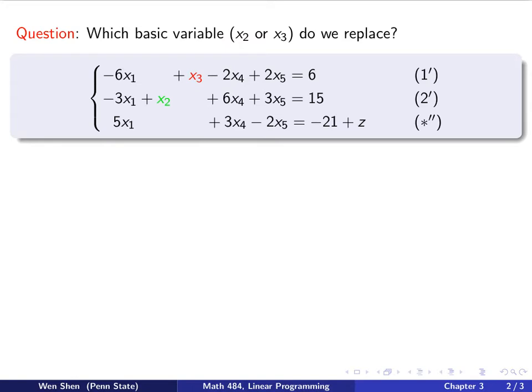Here is the next level of question. Once you have decided to move x5 into the basic variables, that means you will have to choose one of the basic variables to replace with. Here we have x2 or x3 as the previous set of basic variables. Then the question is, which one of them should I replace with x5?